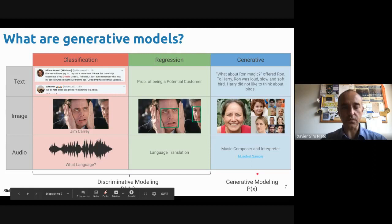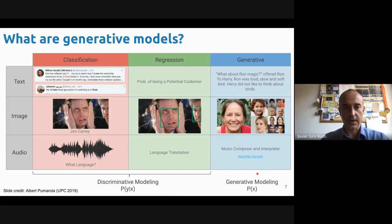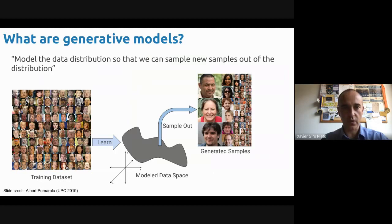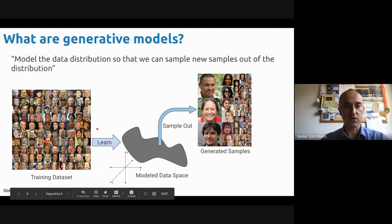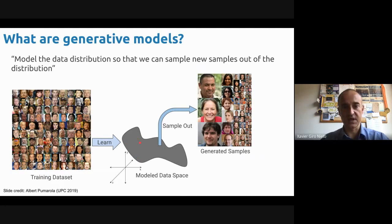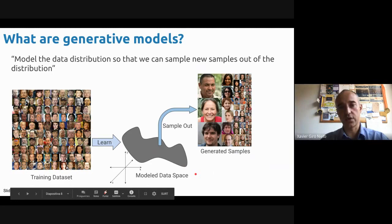In the past, basically what we tried to do is to predict labels out of data, but now that's not what we want. What we want now is to model the distribution of data so we can sample new samples out of it. There's still going to be a training dataset. Imagine we have a large training dataset of faces of people, and from that we would like to learn some distribution or some manifold in the data space, so that we can generate new samples out of it — faces of people that do not exist.